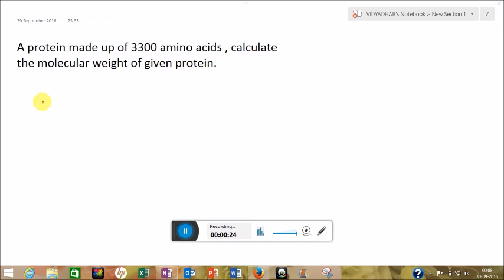For this type of question, you should know two things. First thing is the average molecular weight of amino acid is 128 Dalton, but when amino acids are polymerized to form protein, their molecular weight becomes 110 Dalton. This is due to release of water molecule.